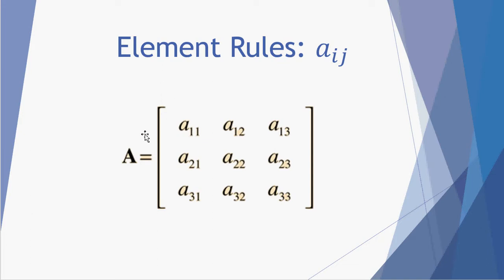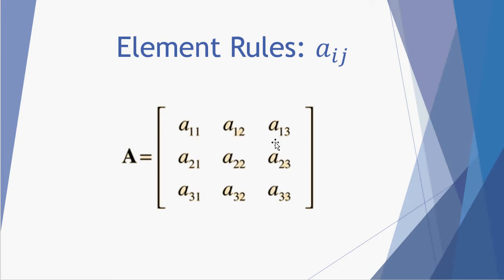This is simply a numbering system for row 1 column 1, row 2 column 1, row 3 column 1. So you can see it represents the row first and then the column. The second column here is row 1 column 2, row 2 column 2, row 3 column 2. And finally we have row 1 column 3, row 2 column 3, and row 3 column 3.